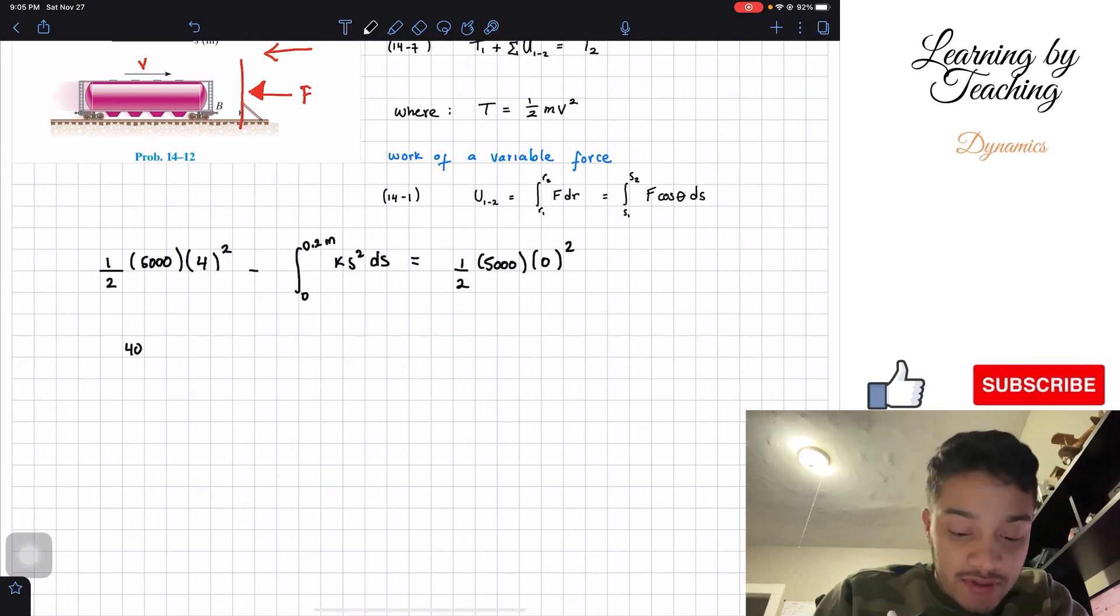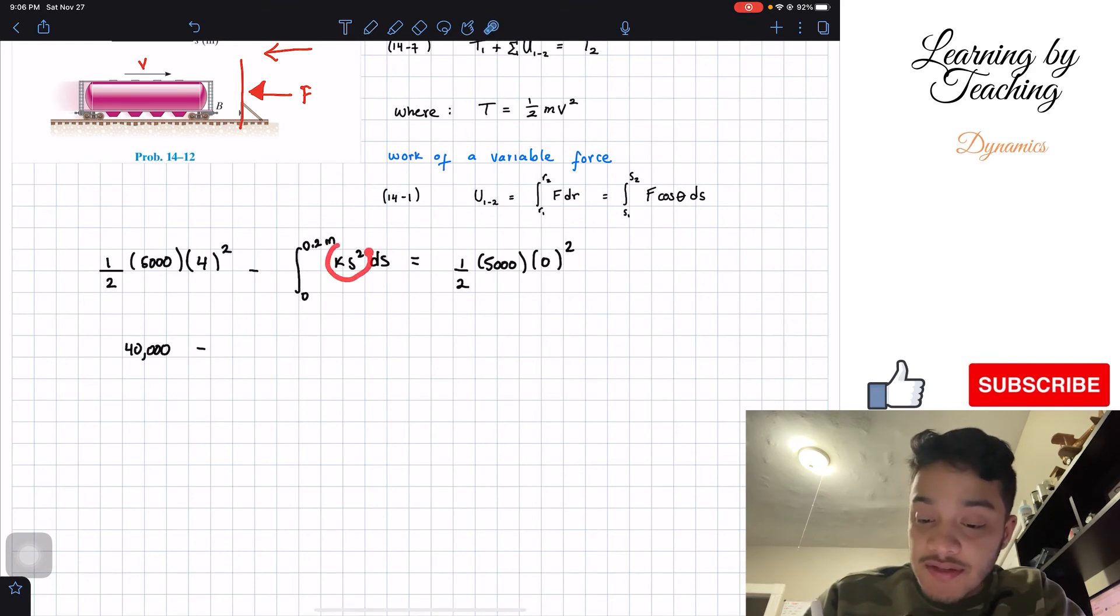Let's simplify this and put it into our calculator and if we do that we'll end up having 40,000 minus the integral of k s squared ds.